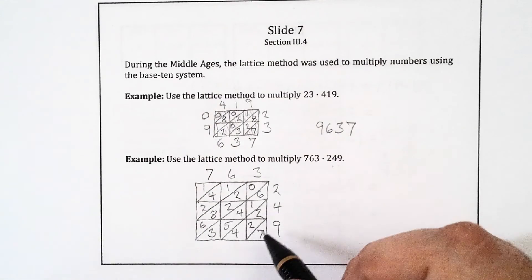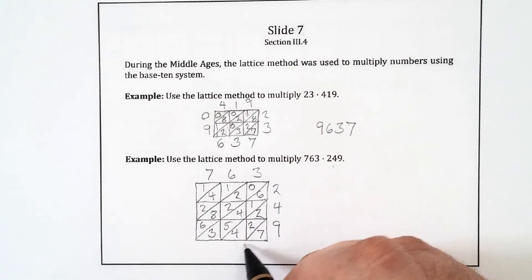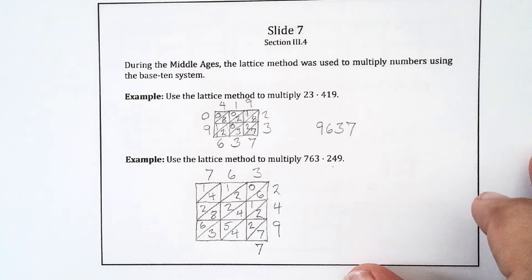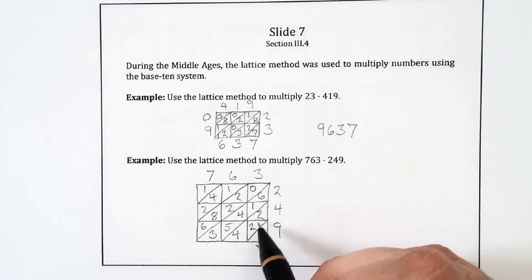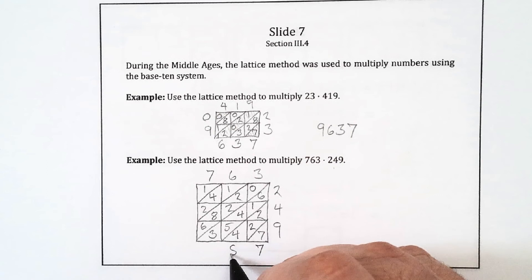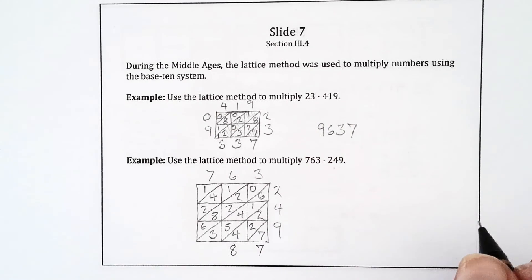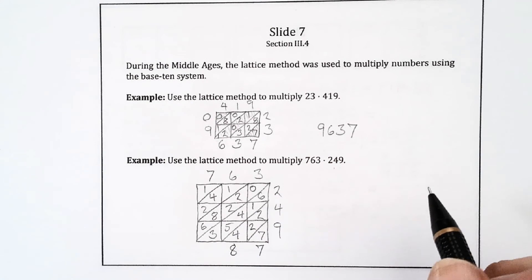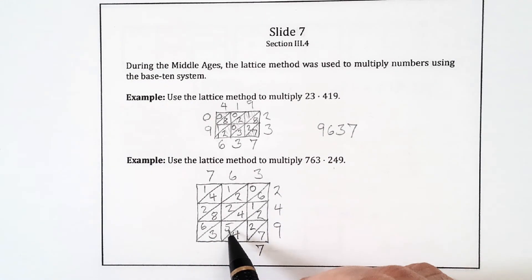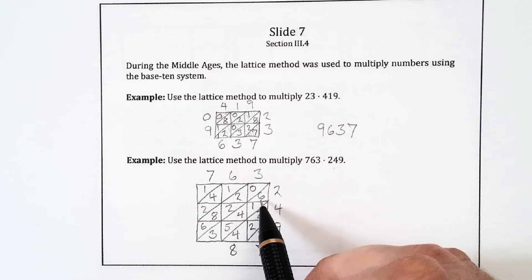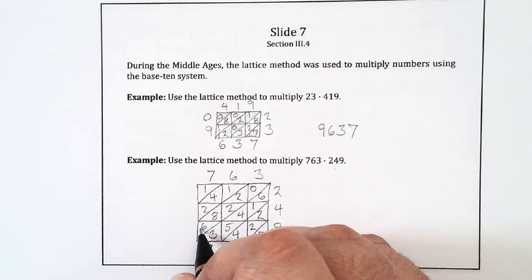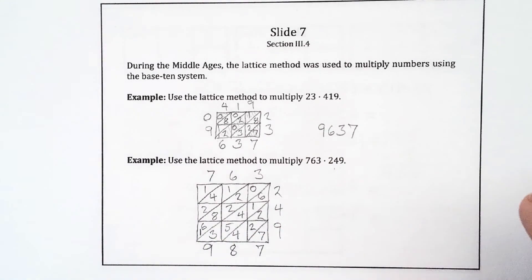Now I'm going to add down the diagonals, starting in the lower right-hand corner, which just gives me 7. And then in the next diagonal, I have 2, 2, and 4, which add up to 8. And then I have 6, 1, 4, 5, and 3. 3 plus 5 is 8, plus 4 is 12, plus 1 is 13, plus 6 is 19. So I put a 9, and then I squeeze that 1 into the next diagonal.